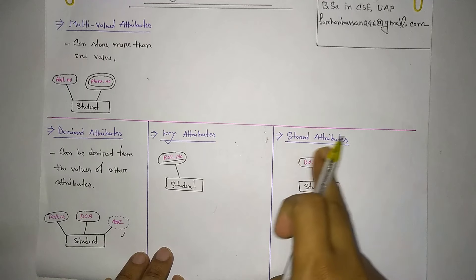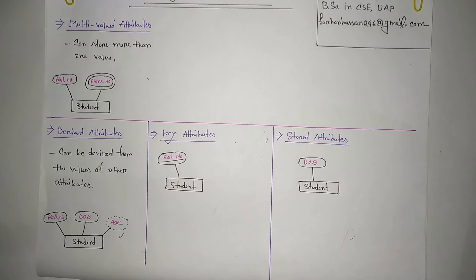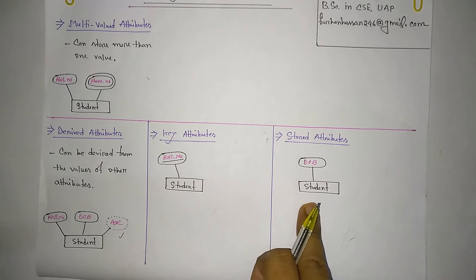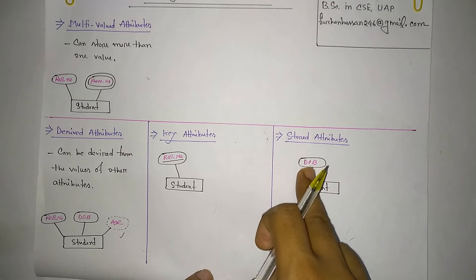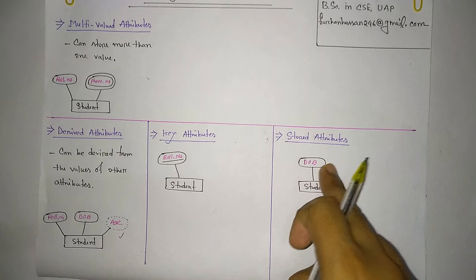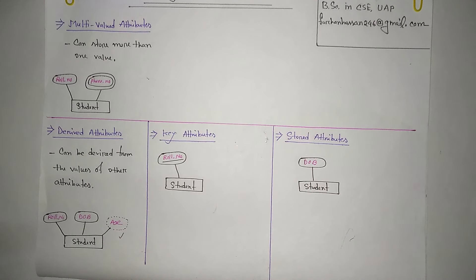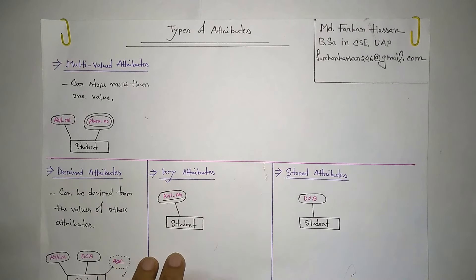The last type is stored attributes. Stored attributes are attributes that are fixed and do not change. For example, the date of birth for a student entity is a stored attribute, because the date of birth remains the same and does not change. Thank you so much for joining us, and we'll see you in the next video.